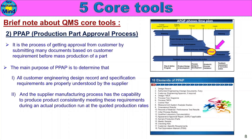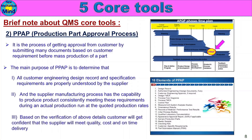The supplier has the capability to produce product consistently meeting these requirements during an actual production run at the quoted production rates. We understand the technical and quality requirements. The customer expects the quantity and on-time delivery capacity, which the PPAP process confirms. Based on verification of these details, the customer gains confidence that the supplier will meet quality, cost, and on-time delivery, and will approve the PPAP.